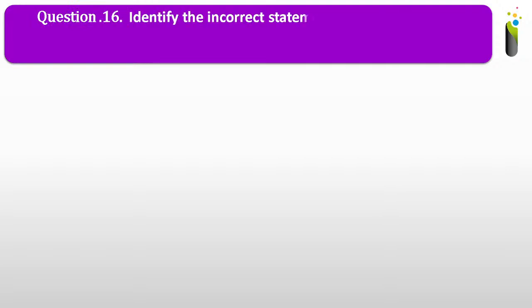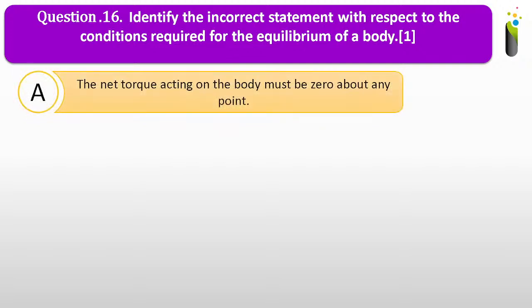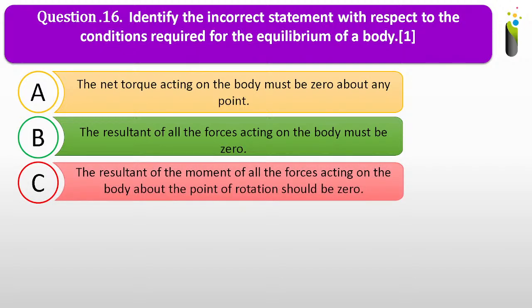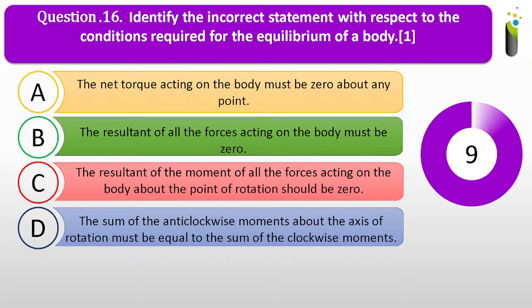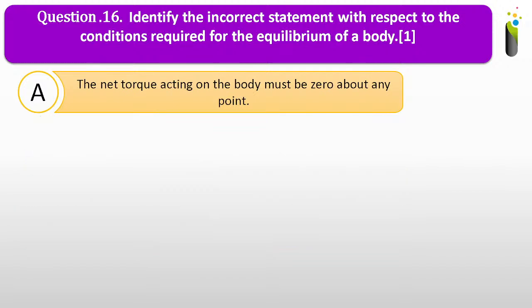Question number sixteen. Identify the incorrect statement with respect to the conditions required for the equilibrium of a body. A, the net torque acting on the body must be zero about any point; B, the resultant of all the forces acting on the body must be zero; C, the resultant of the moment of all the forces about the point of rotation should be zero; D, the sum of the anticlockwise moments about the axis of rotation. The correct answer is B — the net torque acting on the body must be zero about any point is the incorrect statement.